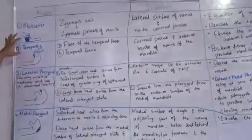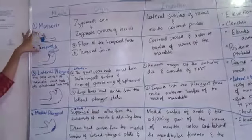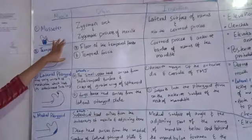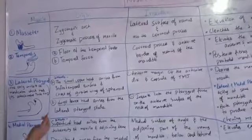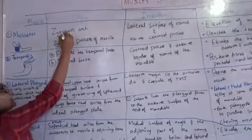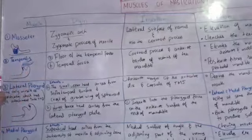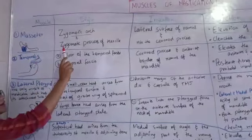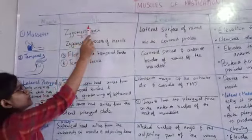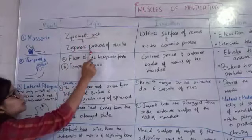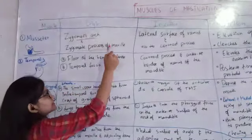First of all, Masseter. Where does its origin come from? It comes from the zygomatic arch. The zygomatic arch means the zygomatic bone — specifically the zygomatic arch and the zygomatic process of the maxilla.